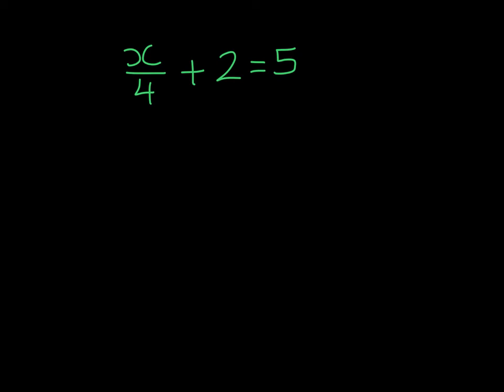Here we see x is being divided by 4, and we are also adding 2. So the inverse operation we're going to do first is to subtract 2 from both sides. If I have 2 and then subtract 2, I'm just left with x divided by 4. On the right-hand side, 5 take away 2 is 3.